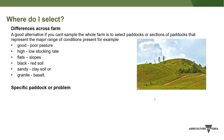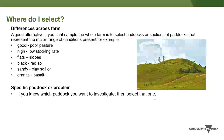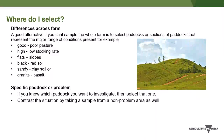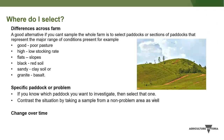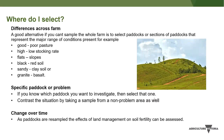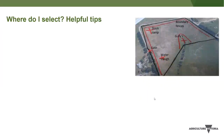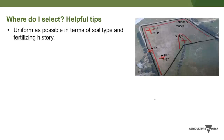If it's a specific problem paddock, select that one and contrast it by also sampling a non-problem area — don't just sample the poor paddock in isolation, always pair it with something to compare. If you want to understand change over time, re-sample paddocks you've already sampled previously to track how management practices or soil fertility are changing.